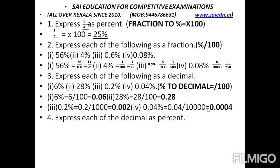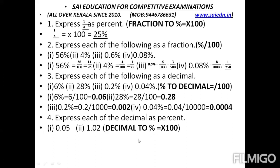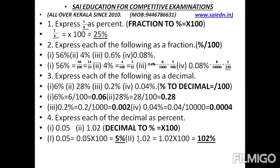Question number 4: express each of the following decimals as a percentage. To convert decimal to percentage, multiply by 100. So 0.05 into 100 equals 5%. And 1.02 into 100 equals 102%.